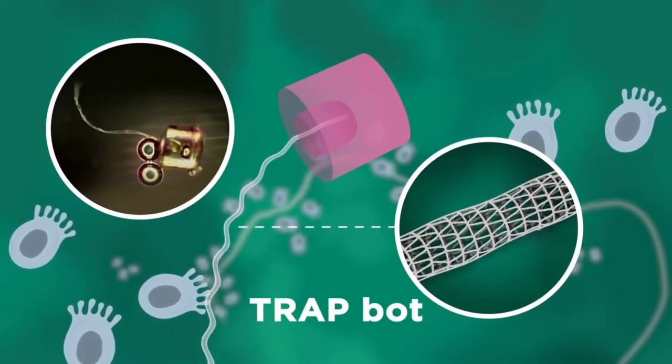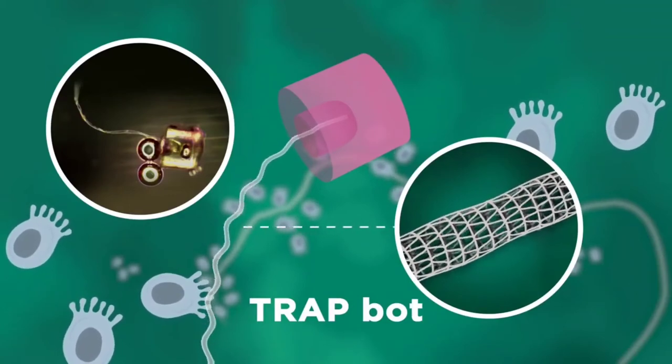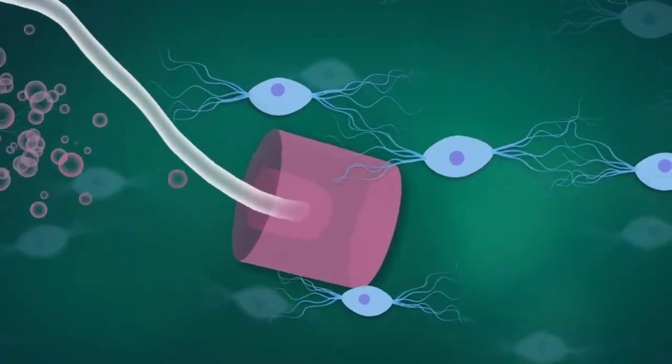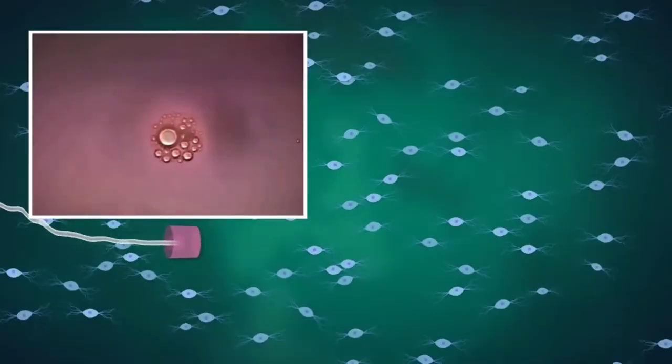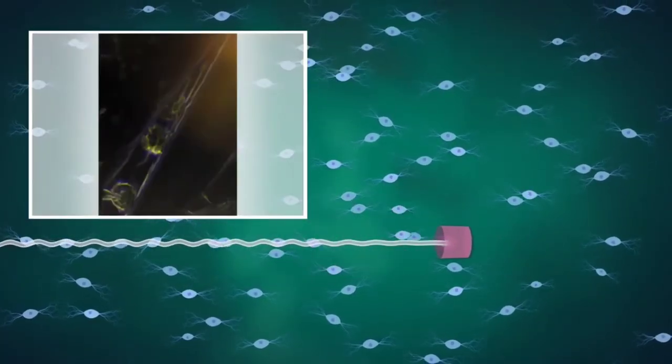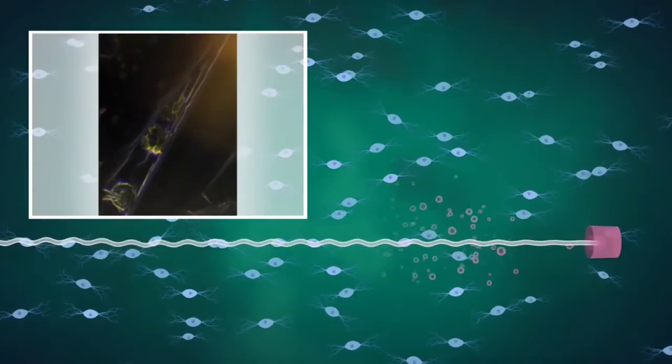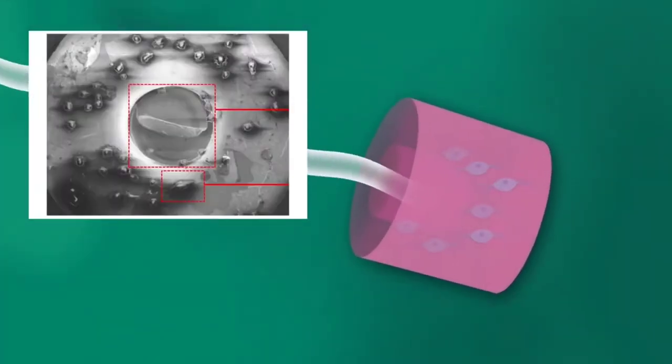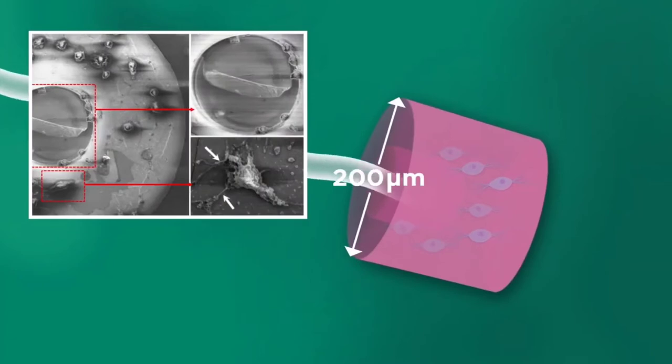which can capture and transport live cells to a desired location. Much like a spider weaving a web, these micro-bots can spit out thread-like gel to trap living cells and incorporate them in their hollow micro-cylinder. This micro-cylinder is about 200 micrometers in diameter.